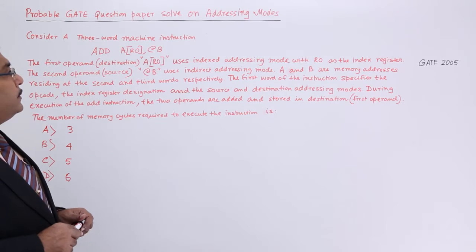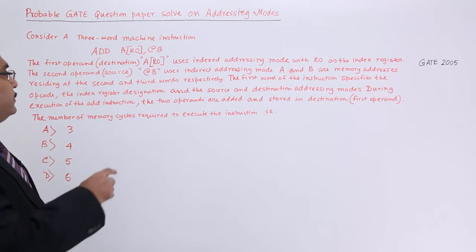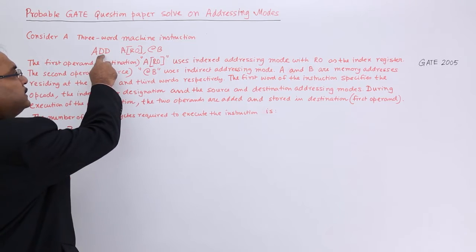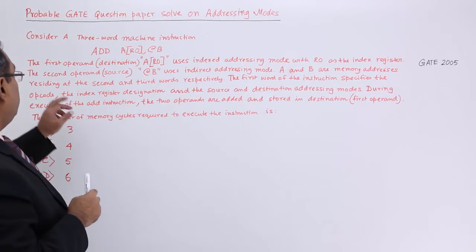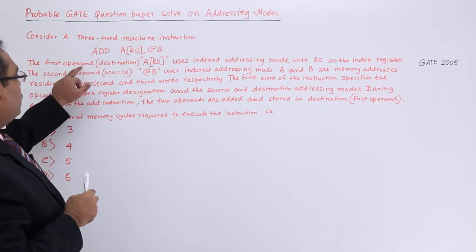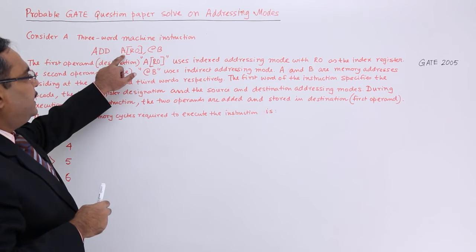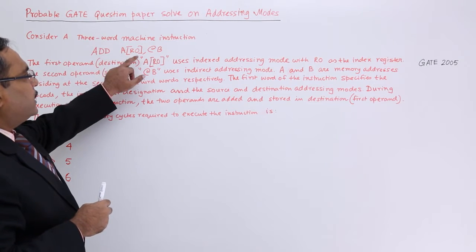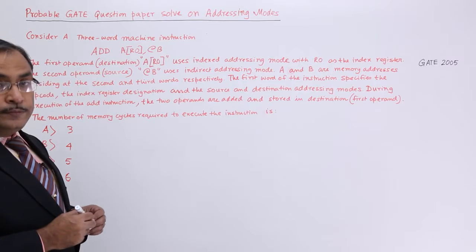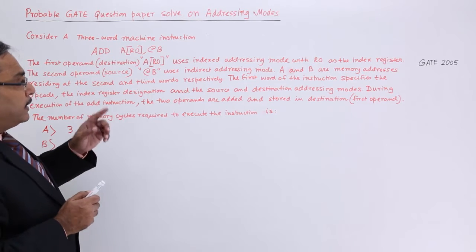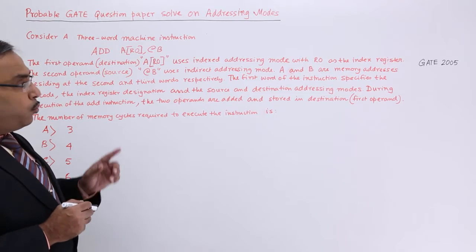Consider a three-word machine instruction. Three words means one, two, three. The first operand destination, that is r0, uses indexed addressing mode. So the first operand is using the indexed addressing mode.